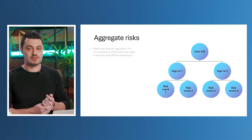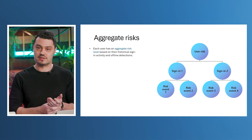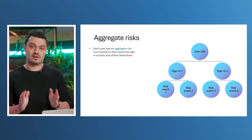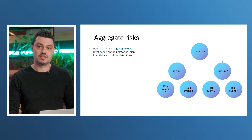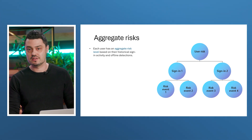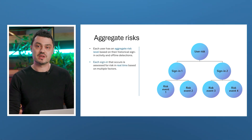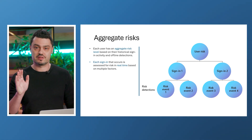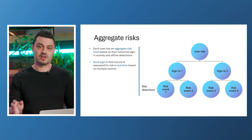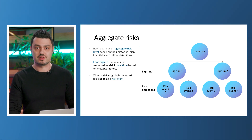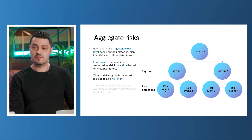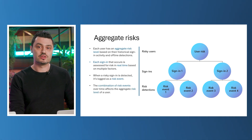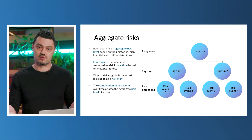In addition to the different types of risk detections, we also aggregate risk. Each user has an aggregate risk level, which is built from the combination of all different risk events, risk detections, and the sign-ins that the user has had. If a user has multiple sign-in detections for medium risk, the user itself will be put at medium risk as an aggregation of those detections if they were not remediated during the sign-in by the policy. If they were remediated, they will not be aggregated into the user risk, as they are not risky anymore.